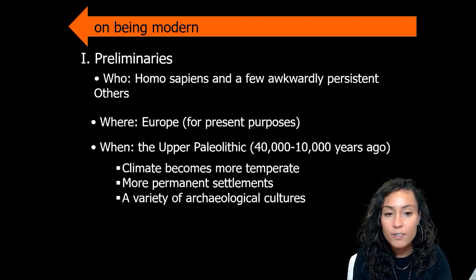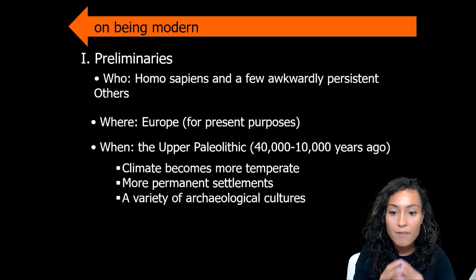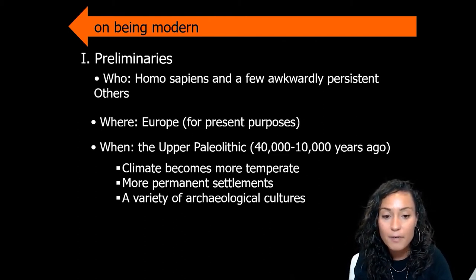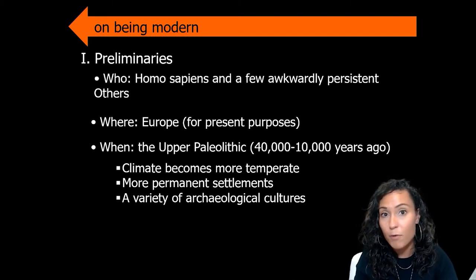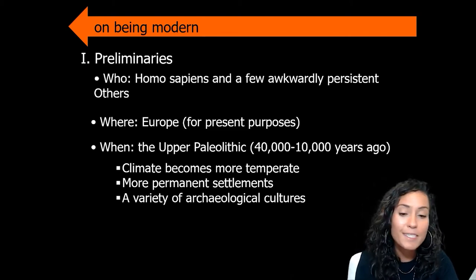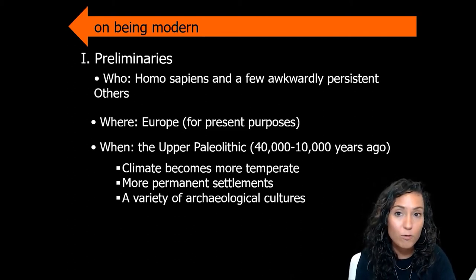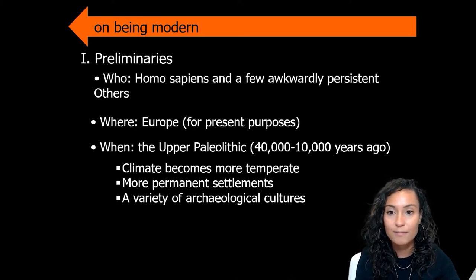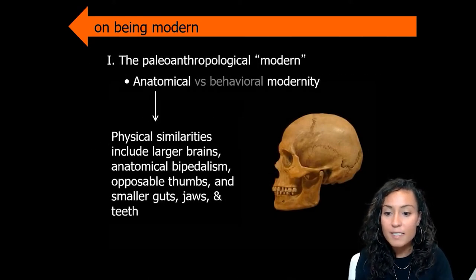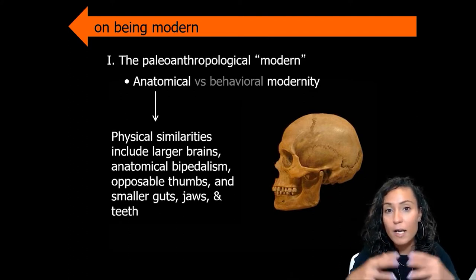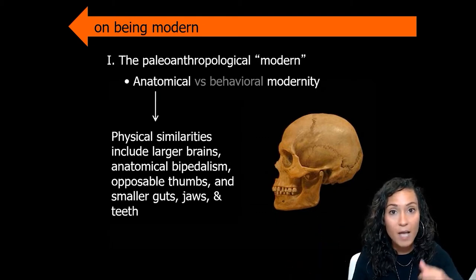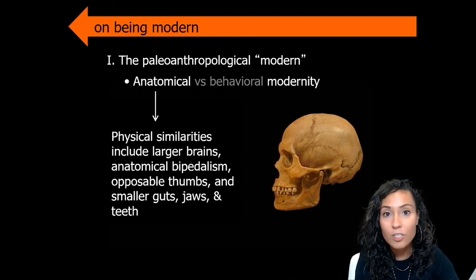During this particular time period in the Paleolithic, we have a couple of different phenomena happening. First, we see climate becoming more temperate. We also see that humans are starting to live in more permanent settlements, and we see a diversification in the types of stone tools and other types of material culture being produced by our hominin ancestors. During this time period, Homo sapiens are pretty much anatomically modern — they had large brains, anatomical bipedalism, opposable thumbs, and smaller guts, jaws, and teeth.